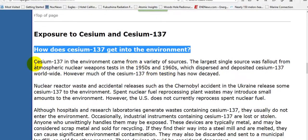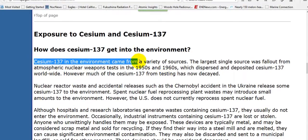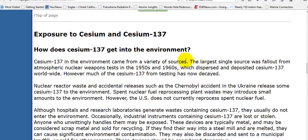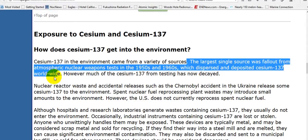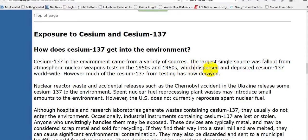Exposure to cesium-137. Cesium-137 in an environment came from a variety of sources. The largest single source was fallout from atmospheric nuclear weapons tests in the 50s and 60s, which dispersed and deposited cesium-137 worldwide.